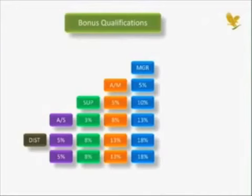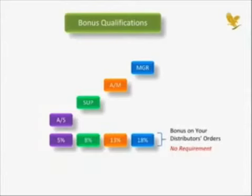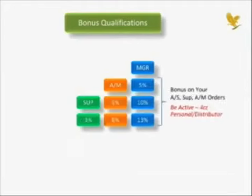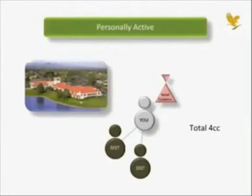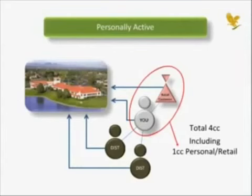There are various requirements to receive these bonuses. In order to receive a bonus on your personal orders, the only requirement is that you place an order in your name. To receive a bonus on your distributor's orders, there are no requirements on your part. After you reach the level of Supervisor, in order to qualify to receive bonuses on your Assistant Supervisors, Supervisors, and Assistant Managers' orders, you must be active with 4 case credits of personal and new distributor activity during the month. The 4 case credits that qualify you as active are accumulated from three sources: purchases made by you, by your retail clients, and the purchases made by your personally sponsored distributors who are at the distributor level. Included in the 4 case credit total, at least one case credit must come from you and your retail clients.